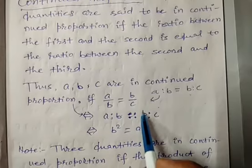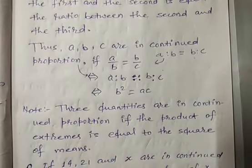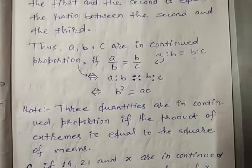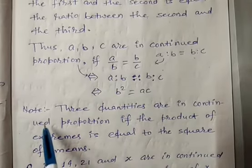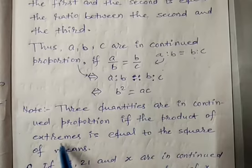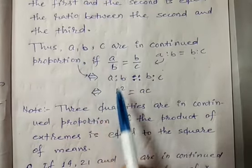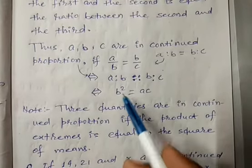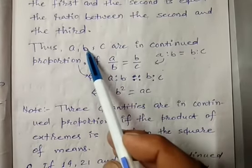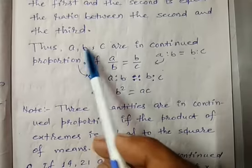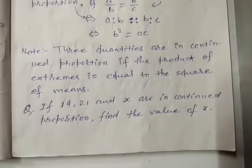Note an important point: three quantities are in continued proportion if the product of extremes is equal to the square of means. Product of extremes: A × C; square of mean: B². इस प्रकार A × C = B². एक दूसरा relation यह है कि ratio of first and second is equal to ratio of second and third.